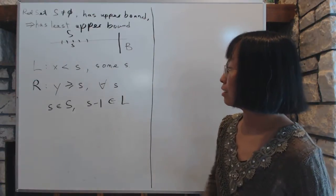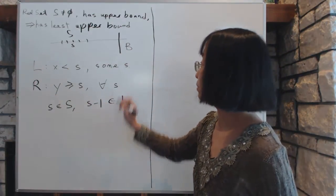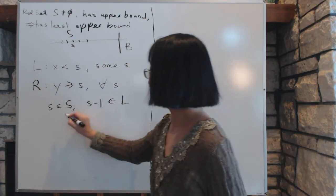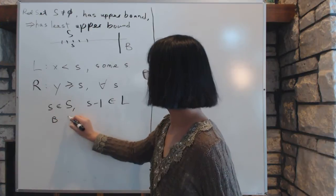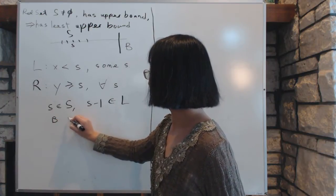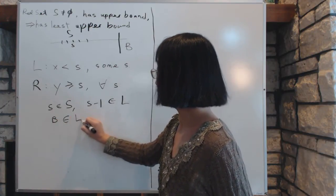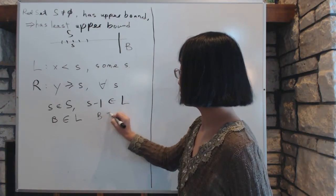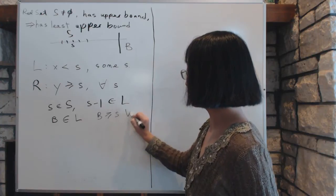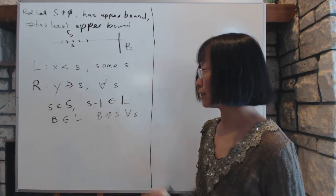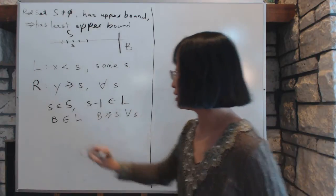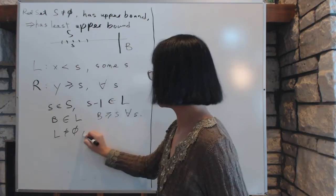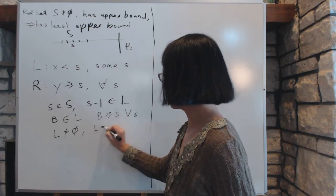Similarly, we look at R and ask: is R empty? No, because the set S has an upper bound, that B. The number B is inside the set R because B is the upper bound by definition — B is bigger than s for all s inside the set. So this proves that L is not empty and R is not empty; they both have stuff inside them.